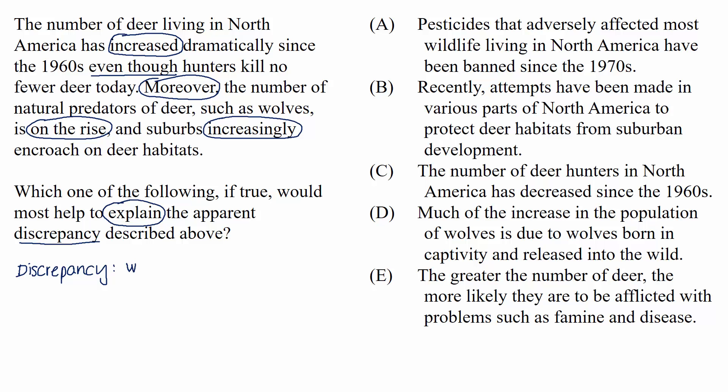Let's phrase the discrepancy as a question: why are there more deer today, even though so many deer threats have increased? We don't need to make a prediction for these question types because there could be so many possible explanations. The most important piece is to understand the discrepancy in a very clear way. Now we move to the answer choices and evaluate each one against the discrepancy, asking: does this choice provide the light bulb that we're looking for? Does it make us say, okay, now I understand why there are more deer living today, even though so many deer threats have increased?